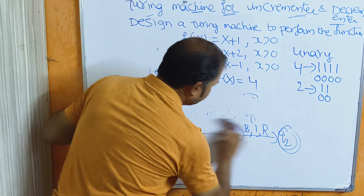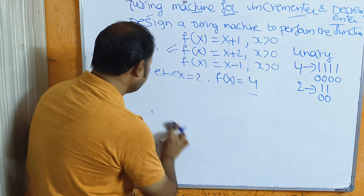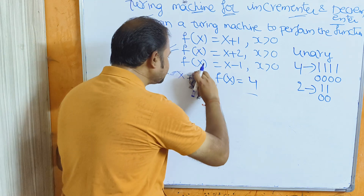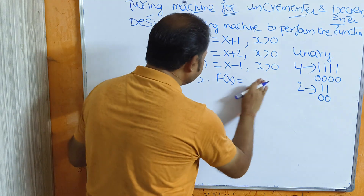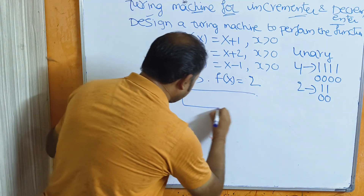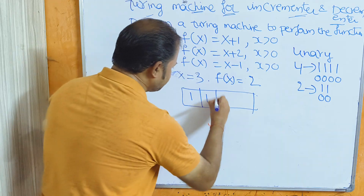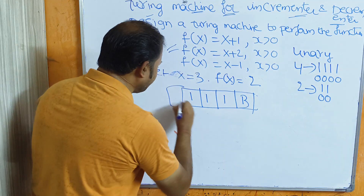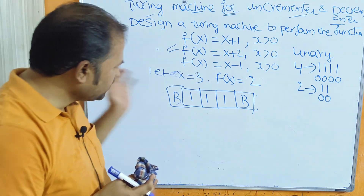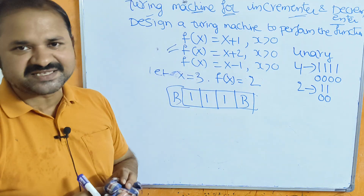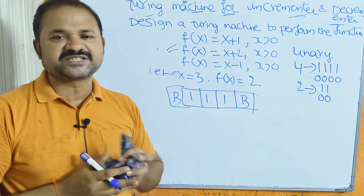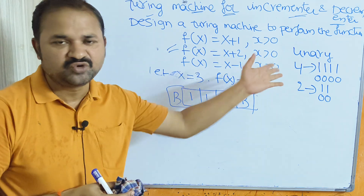Next, f(x) = x-1. Let x = 3; then f(x) = 3-1 = 2. The input string has three 1s, with blank symbols before and after. The logic: start at the first 1 and move the head towards the right until we get the blank symbol. After getting the blank symbol, move the head one position to the left, then replace that 1 with a blank symbol. Then we will get two 1s, which is nothing but 2.